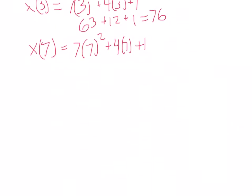Now X of 7: 7 times 7 squared plus 4 times 7 plus 1. So this is 7 times 49 plus 28 plus 1. 49, let's say that's 50 times 7, so it's 350 minus 7 is 343 plus 29. 343 plus 29 is 372.